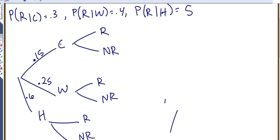So it told us that if we know it's cold, the probability of raining is 0.3. If you know it's warm, then the probability of raining is 0.4. And then it said if you know it's hot, the probability of rain is 0.5.